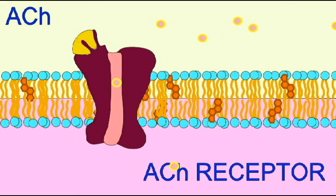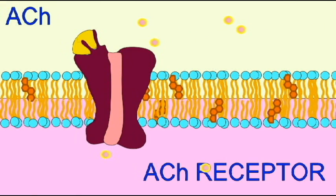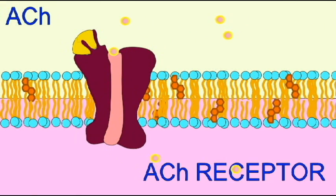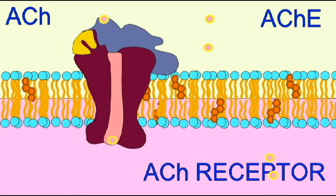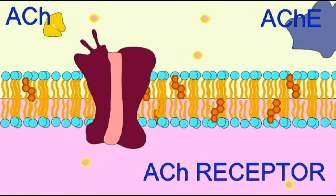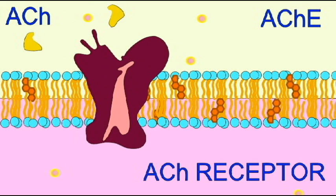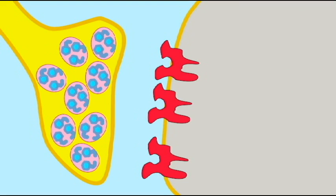Some of these receptors are ion channels, and so when the neurotransmitter binds the receptor, the ion channel opens and ions can now go from an area of high concentration to low concentration.